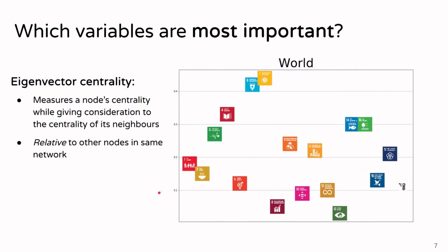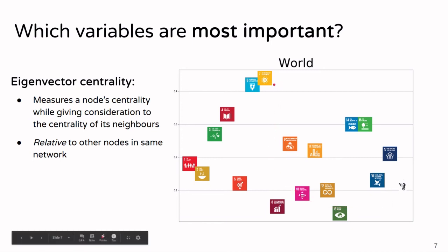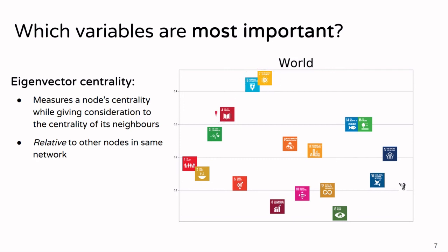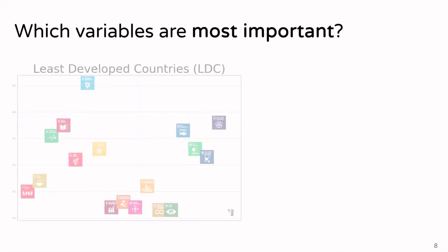The result shows eigenvector centrality on the y-axis and the different SDGs plus climate change on the x-axis. For all countries combined, we find that clean energy is very important, together with clean water and sanitation. Quality education is also very important, and closely related are SDG 14 and 15, which are both environmental measures.